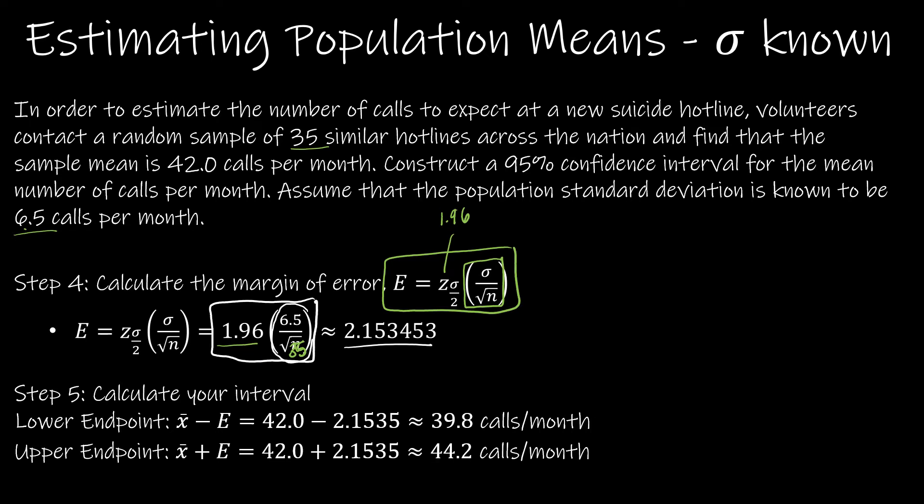Now, just to remind you what we're doing. Remember, we had a point estimate. And then we said add e to the right, subtract e to the left. And that's going to give me the endpoints of my interval. So my point estimate was the 42. So that guy is here, 42 in the middle.